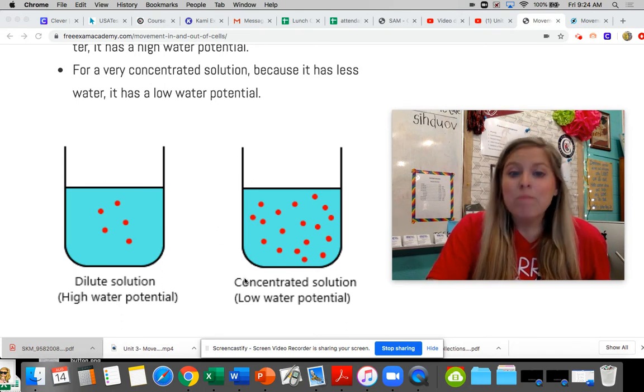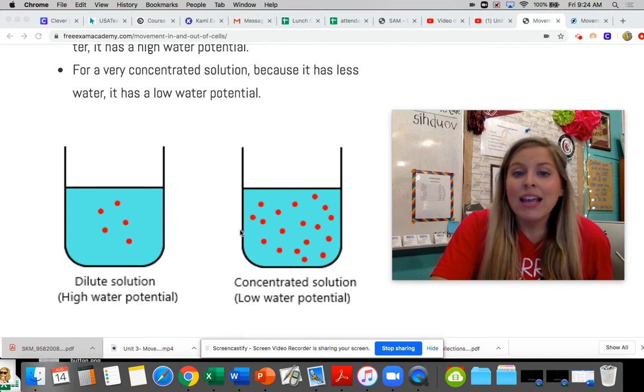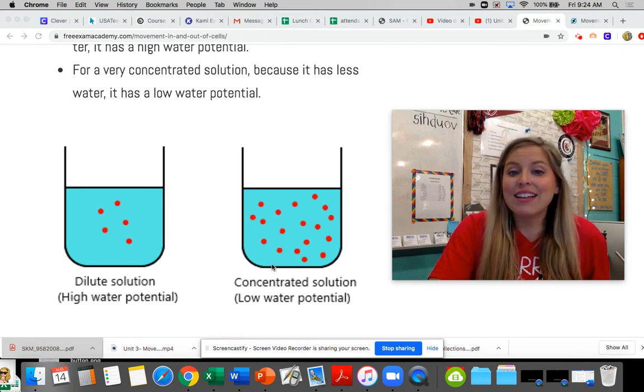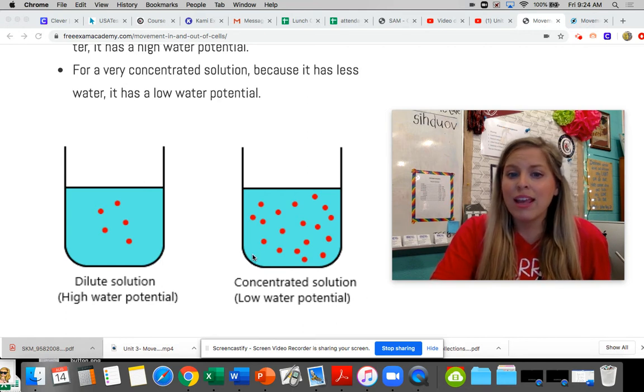We can look at the opposite at a concentrated solution. A concentrated solution has a low water potential. There are more, let's say, sugar molecules and less water in this concentrated solution because it's concentrated with those sugar molecules, and there's less water, so a lower water potential.